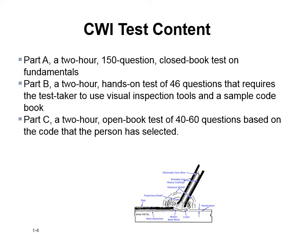Part B is a two-hour hands-on test of 46 questions requiring the test taker to use visual inspection tools and a sample code book. They have plastic weld samples — you go into a room and answer 46 questions: welds good, bad, or otherwise. Part C is a two-hour open book test of 40 to 60 questions on a code, usually API 1104 or AWS D1.1, depending on your industry. If you're in oil, go with 1104; if you're structural, go with AWS D1.1.